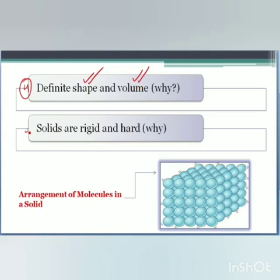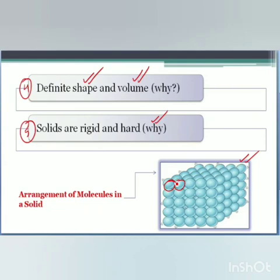The last point is that solids are rigid and hard. Why? It is because they have very strong intermolecular forces of attraction. You can observe from the diagram that the molecules are packed very tightly and cannot move from one place to another, and therefore they are very hard and rigid. In this session we have discussed about the arrangement of molecules in a solid. In our coming session we will discuss about the similar arrangement of atoms or molecules in liquids and in gaseous states.